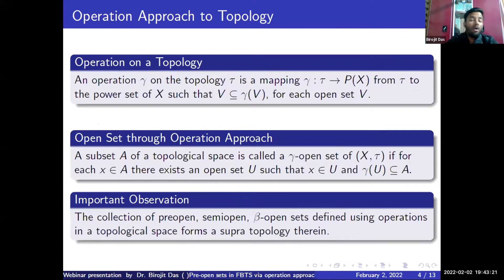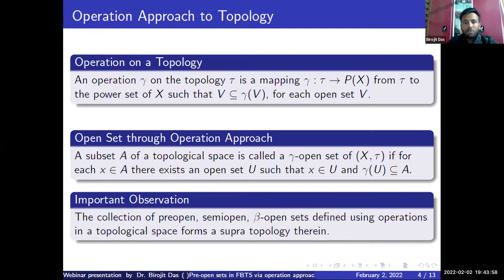Now I will discuss what an operation approach to a topological space means. Suppose we consider a non-empty set X and a topology tau defined on X; members of tau are called open sets. Through the operation approach, other open sets are discussed differently. We define an operation whose domain is the topology itself and whose codomain is the power set of X. A mapping gamma from tau to the power set of X is called an operation if, for any open set V, its image under gamma is a superset of V.